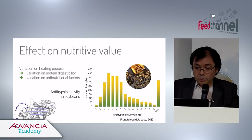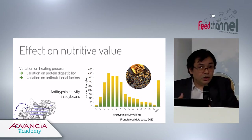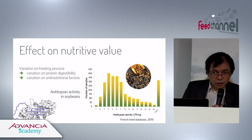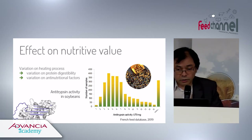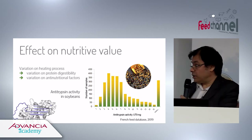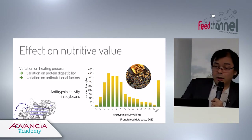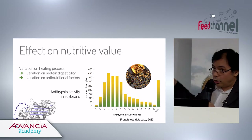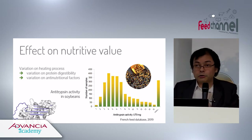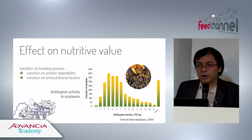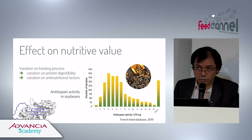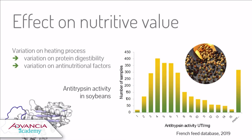The heating process, depending on the species, has a direct effect on protein degradability and also on anti-nutritional factors. For example, a graph of anti-trypsin activity in soybeans shows the untreated soybean on the left bar, and even for treated soybeans there is very important variability in the residual anti-nutritional factors remaining in the seed.